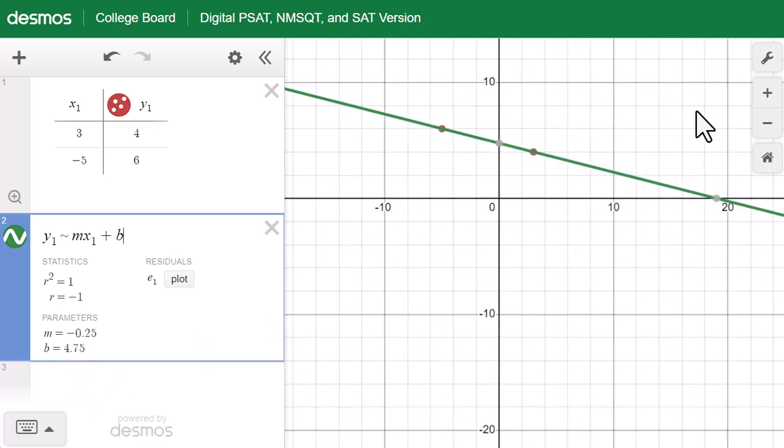From this graph, you could say the x-intercept is 19.0. Y-intercept is 0, 4.75, which is b.